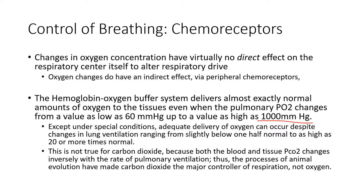PCO2 is our primary driver of respiratory drive — our primary influence. We have a wide range for acceptable O2, from 60 all the way up to about a thousand millimeters of mercury. That 60 corresponds to the oxygen-hemoglobin dissociation curve — below that, hemoglobin is not likely to stay saturated. This is not true for carbon dioxide. No matter if it's blood or tissue, PCO2 changes very heavily influence pulmonary ventilation. It's controlled in a very tight window because of the influence of PCO2 on blood pH.